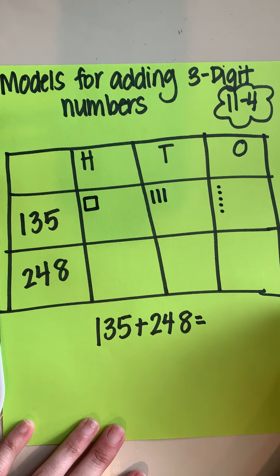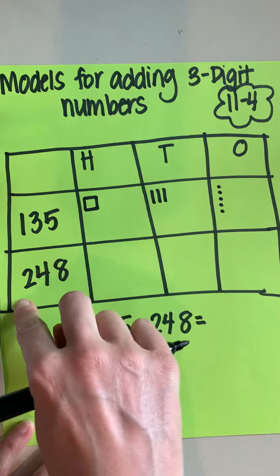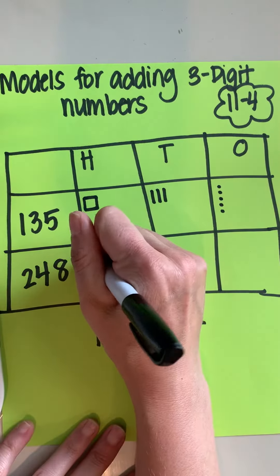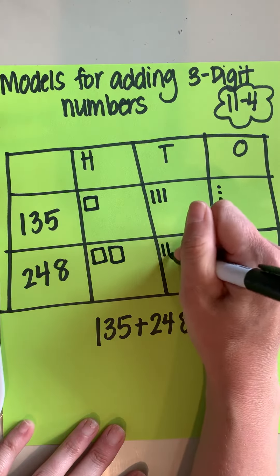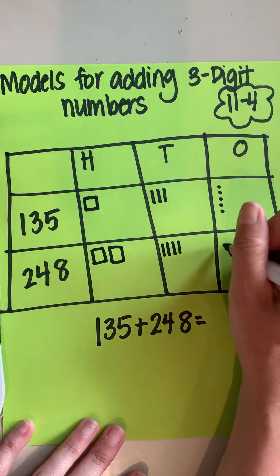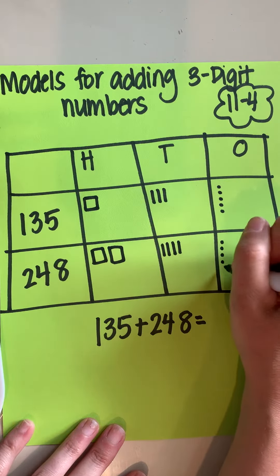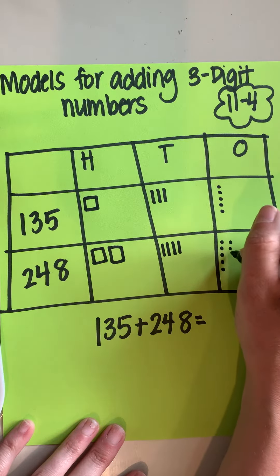Now I have a second number down here, 248. I have one, two hundreds, one, two, three, four tens, and one, two, three, four, five, six, seven, eight ones.